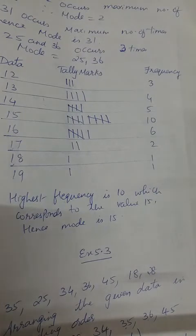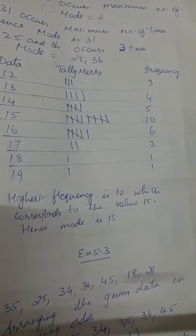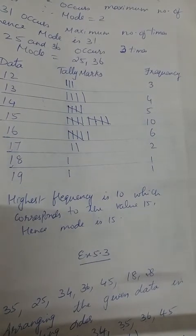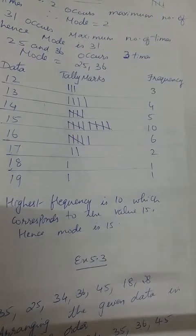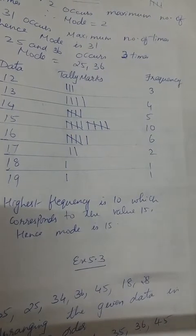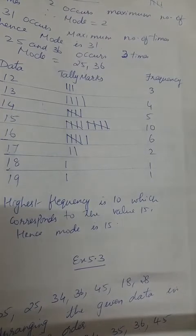Now the next topic is median. Median means the middle value from the set of observations. First you have to arrange the given information in ascending order or descending order, and then see which is the middle value — that middle value will be your median.